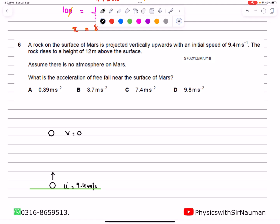The distance traveled is 12 meters. We need to find the acceleration of free fall on Mars.